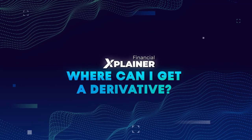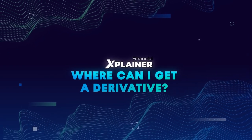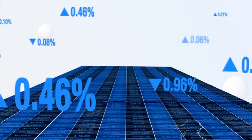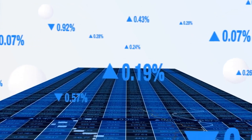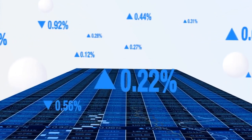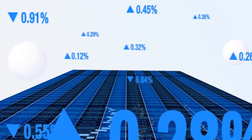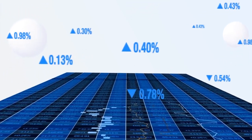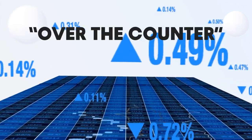Where can I get a derivative? If you look for a standardized and regulated contract protected from default by a counterparty, welcome to the exchanges. There you can usually buy or sell futures and options. If you need a more tailor-made forward, swap, or option, those are made private — in other words, over-the-counter.